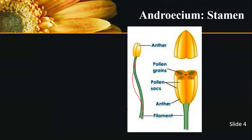The stamen has two ends: a distal end and a proximal end. The proximal end of the filament is attached to the flower, specifically to the thalamus. The distal end of the filament is attached to the anther. The anther is characterized by its base and the number of lobes it possesses.